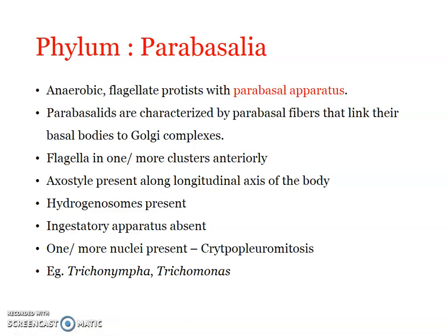Usually there may be more than one flagellum, arranged anteriorly in groups. An axostyle is present along the longitudinal axis of the body. Mitochondria may be lacking, and the reduced mitochondria — that is, hydrogenosomes — are present. The sex stage of parabasalia is absent. One or more nuclei may be present, and this phenomenon is referred to as cryptopleuromitosis, due to which usually more than one nucleus may be present.